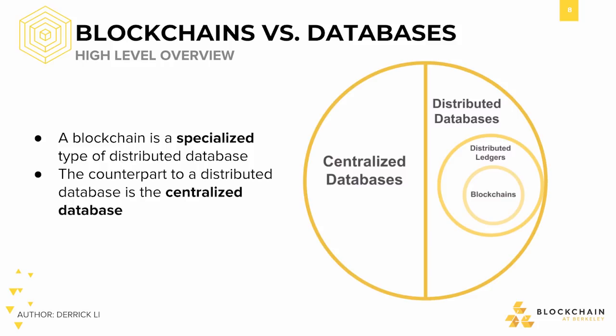One note is that while there might be contention in what the definition of distributed and decentralized and centralized actually mean in the context of database classification, especially within the blockchain space, in this course we generally mean in terms of politics and geography. For example, we might refer to an organization's database systems as centralized because they all operate by a single entity, so they're politically centralized. And in terms of geography and spatiality, we could have a single central database or multiple databases either geographically centralized or decentralized.